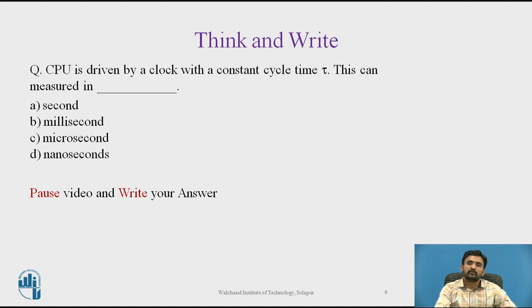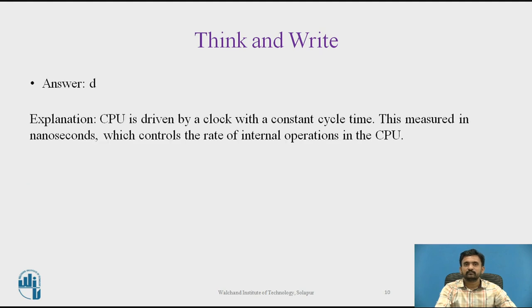A quiz question asks: The CPU is driven by a clock with a constant cycle time t — this can be measured in which unit? The correct answer is option D: nanoseconds. The CPU clock cycle time t is measured in nanoseconds.